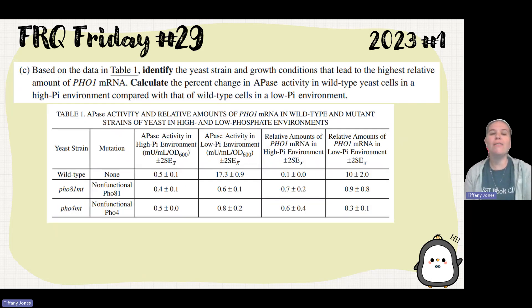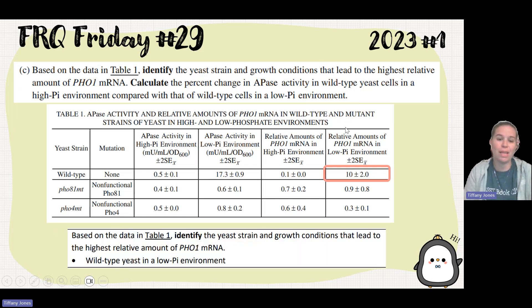Part C, based on the data in table one, identify the yeast strain and growth conditions that led to the highest relative amount of PHO1 mRNA. When I look here, I can see the highest number is 10. So what I'm trying to figure out is what condition caused this. Well, that would be the wild-type yeast and that low inorganic phosphate. So wild-type and the low inorganic phosphate led to the highest amount of the PHO1 mRNA.